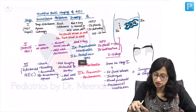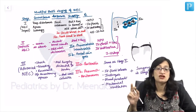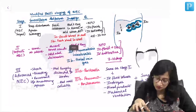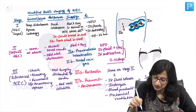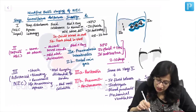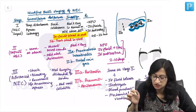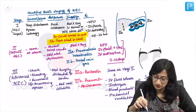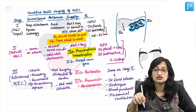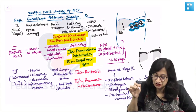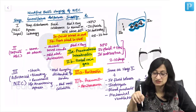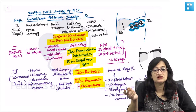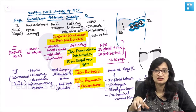To recapitulate: remember at least one de-identifying feature of each stage of NEC. Stage 1A — occult blood in stool. Stage 1B — fresh blood in stool. Stage 2A — pneumatosis intestinalis. Stage 2B — portal vein gas. Stage 3A — peritonitis. Stage 3B — pneumoperitoneum. That covers the staging of NEC along with clinical features, investigation findings, and treatment.